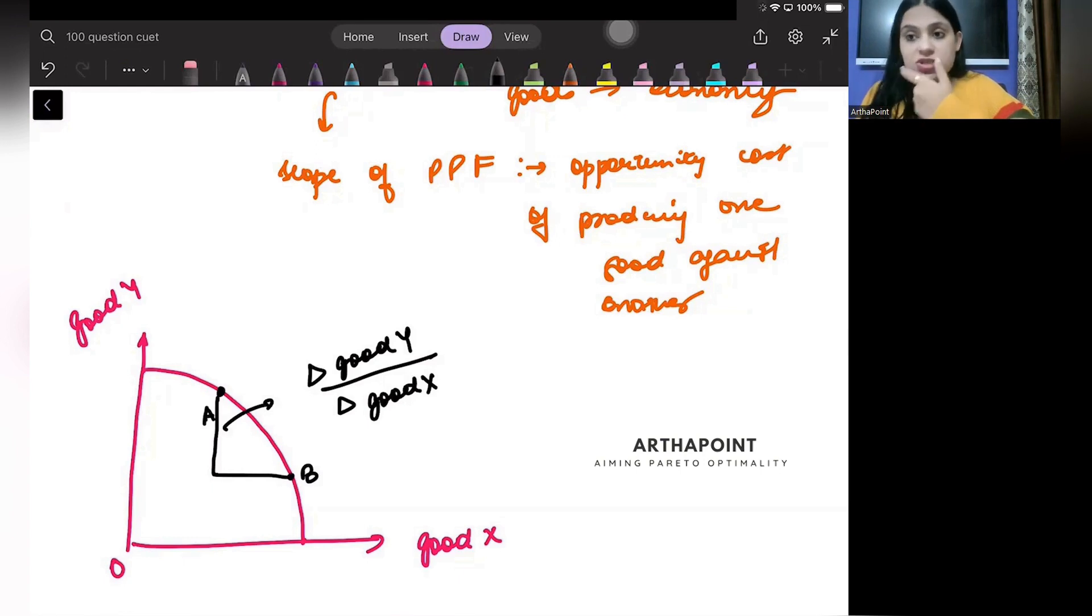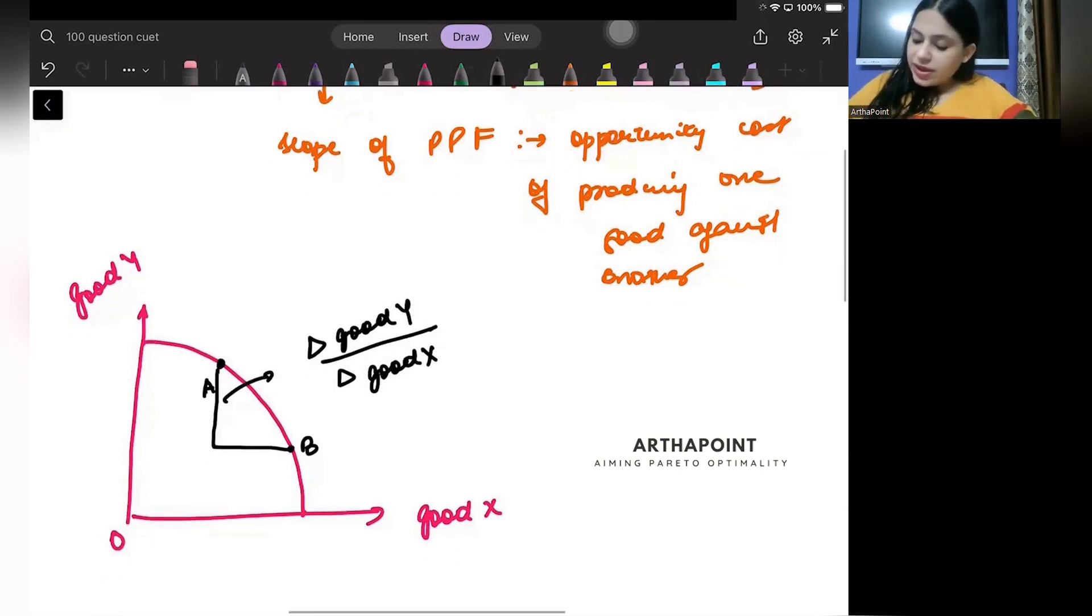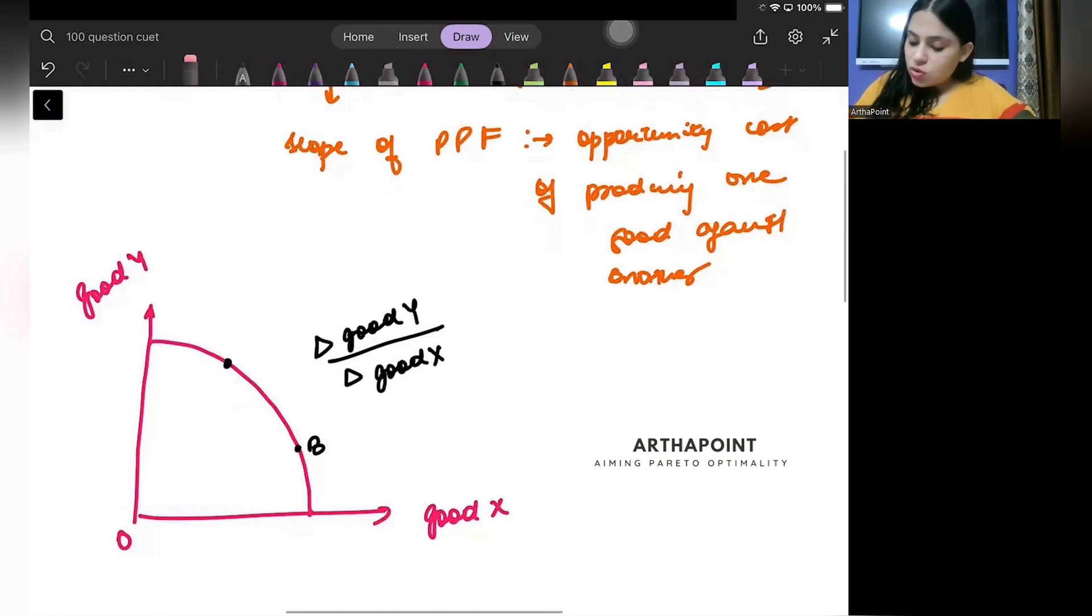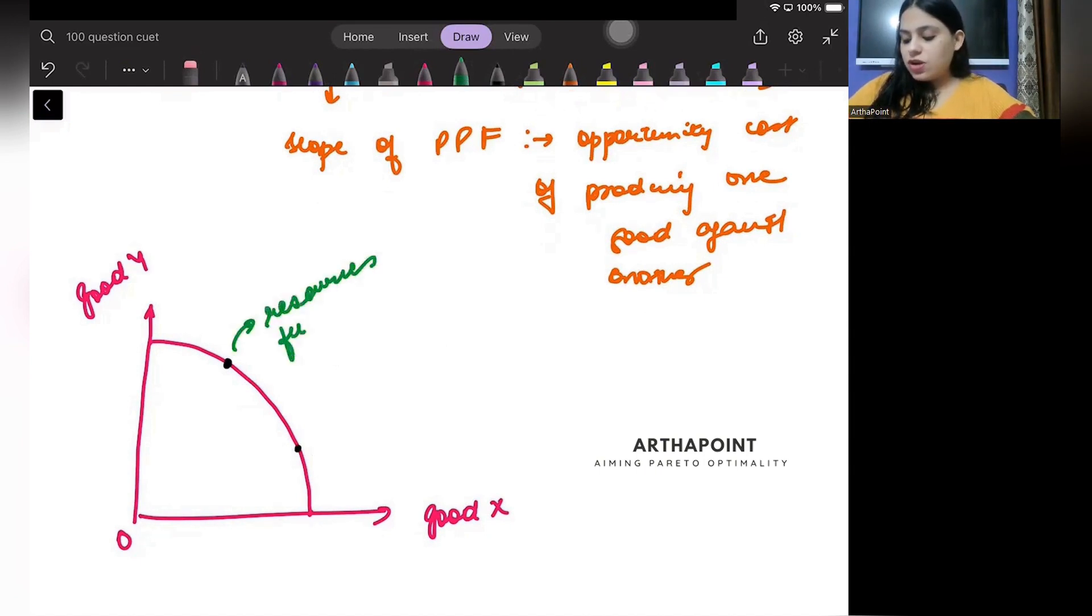How much of good y I have to give up to produce good x? Because resources are limited. Resources are scarce. That is what this point is telling me. Now, any point which is on the PPF means that resources are fully utilized.